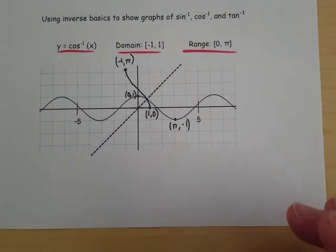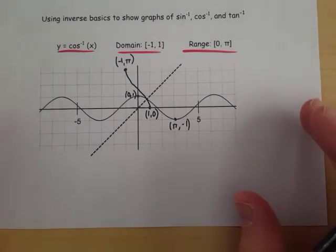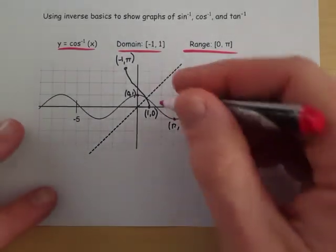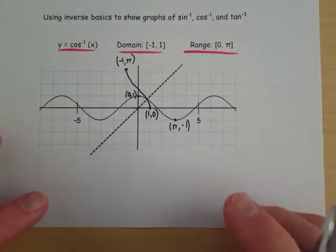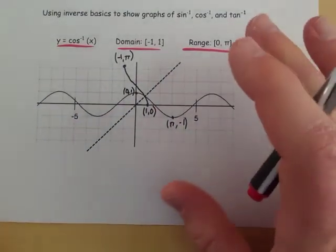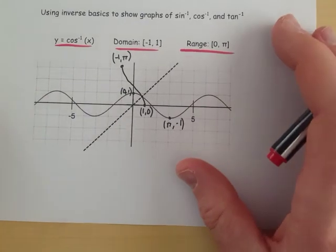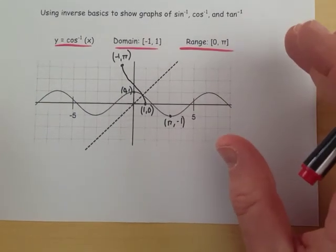Domain, negative 1 to 1. Range, 0 to pi. And we got that, again, from flipping it over from the original cosine graph. We've got one more left after this, but hopefully that gives you an idea of where we get the domain and range for cosine inverse.